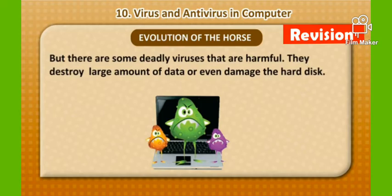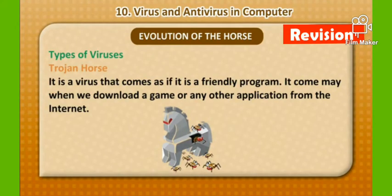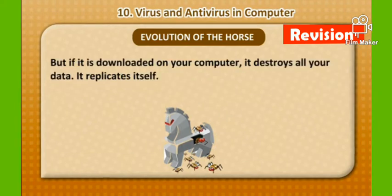Now, types of viruses. The first is the Trojan Horse. It is a virus that comes disguised as a friendly program. It may come when we download a game or any other application from the internet, so whenever you want to download anything, be very careful. Once downloaded, it destroys all your data and replicates itself.